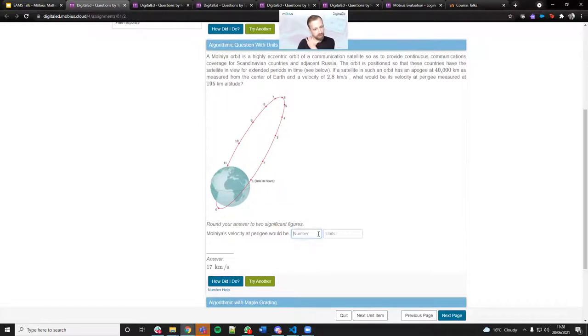It's asking what the velocity of parity would be. Just for the sake of brevity, we've got the answers here. What if I put in 17,000 metres per second, rather than 17 kilometres per second?